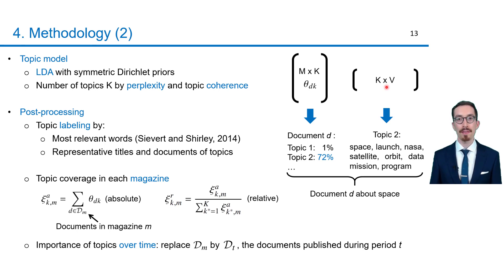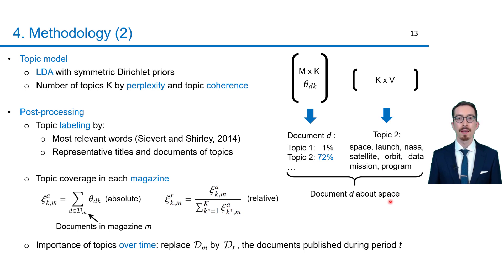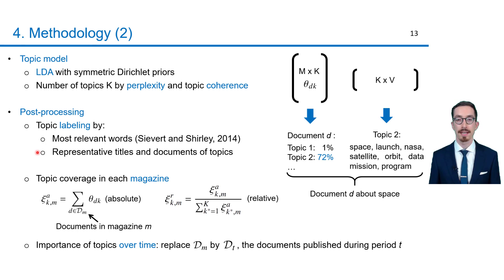For instance, in the context of the previous example, the most relevant words of topic two are space, launch, NASA, and so on. Hence, it is labeled most likely 'space'. Since labeling topics is not always straightforward, I tried to simplify it by the relevance measure of Sievert and Shirley and by including representative titles and documents of topics in the labeling process. In our previous example, it can be seen that 72% of the previous document regarding the moon is about this topic. So, we essentially determined that it is about space as anticipated.